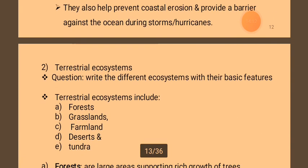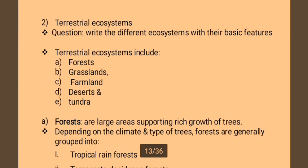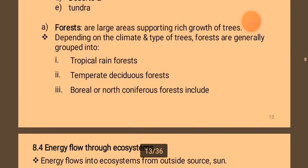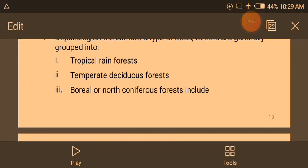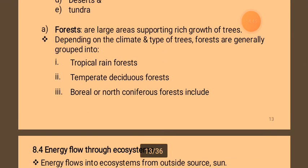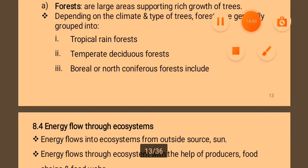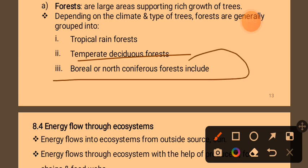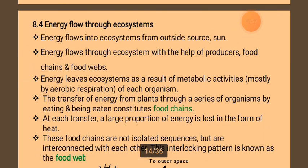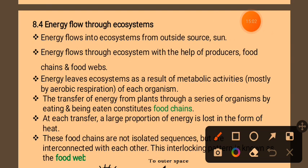Terrestrial ecosystems include forest, grassland, farmland, desert, tundra, and Arctic. Forests are large areas supporting rich growth of trees. Forests include tropical rainforest, temperate forest, and boreal or northern coniferous forest.